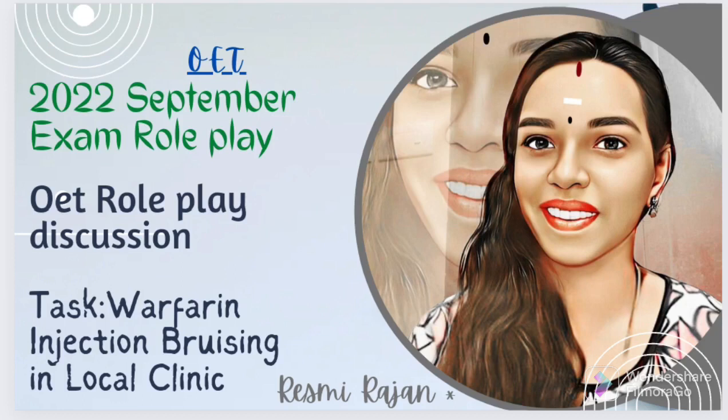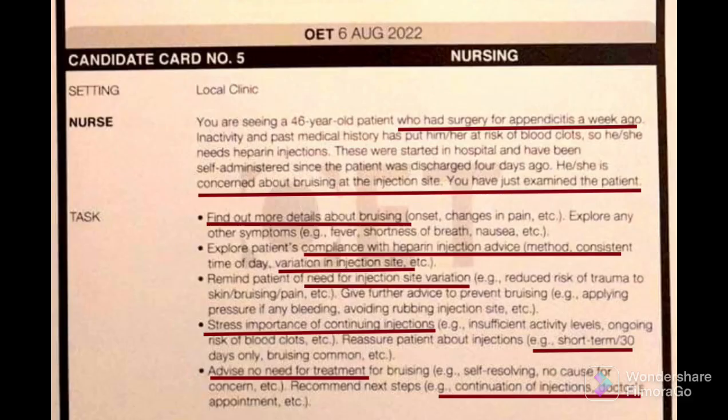Welcome to my OITIS demo. Today we will have another role play card, and here you can see this is a local clinic. The nurse's role is: you are seeing a 46-year-old patient.